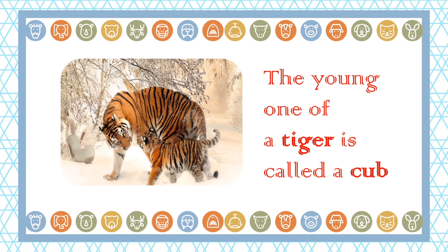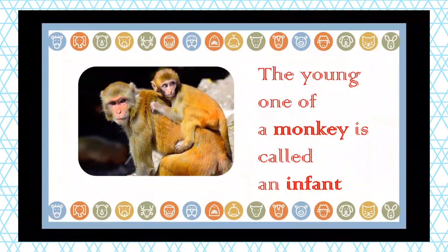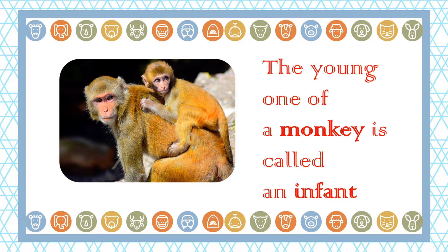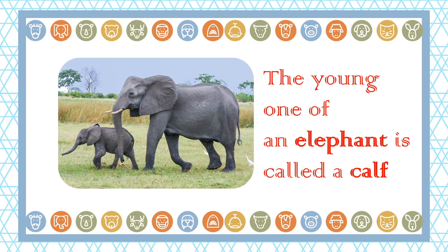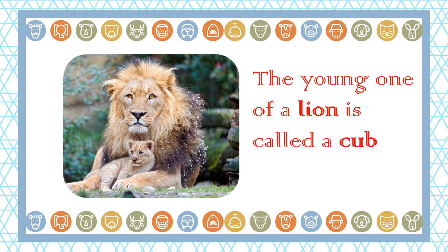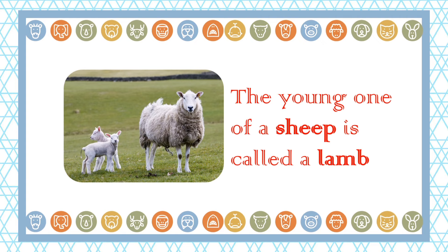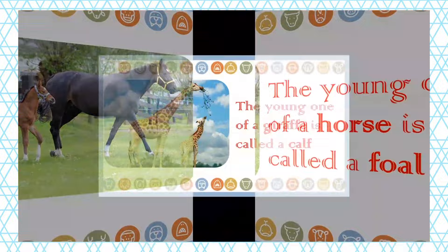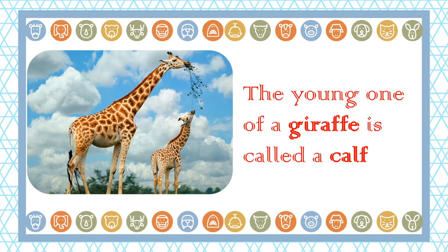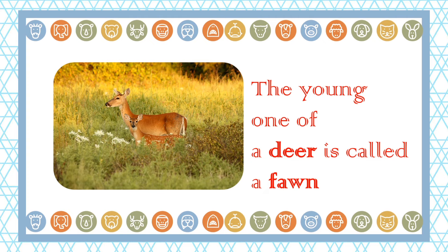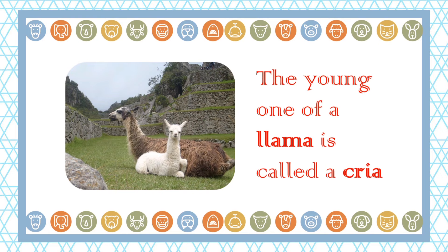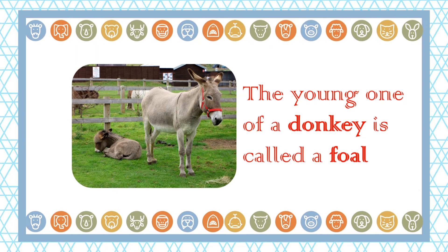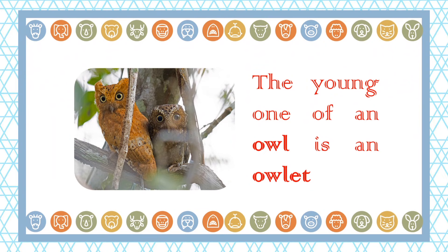Young one of pig is called a piglet. Baby tiger is called a cub. Baby monkey is called an infant. Baby elephant is called a calf. The young one of a lion is called a cub. Baby sheep is called a lamb. Baby horse is called a foal. The young one of a giraffe is called a calf. Baby deer is called a fawn. The baby owl is called an owlet.